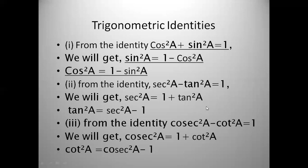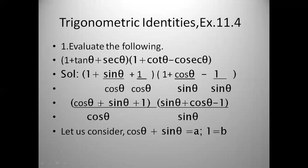Let us see one question from exercise 11.4 — evaluate the following. The first one is: (1 + tan θ + sec θ) into (1 + cot θ − cosec θ). We write tan θ as sin θ/cos θ, and sec θ as 1/cos θ since sec θ is the multiplicative inverse of cos θ.